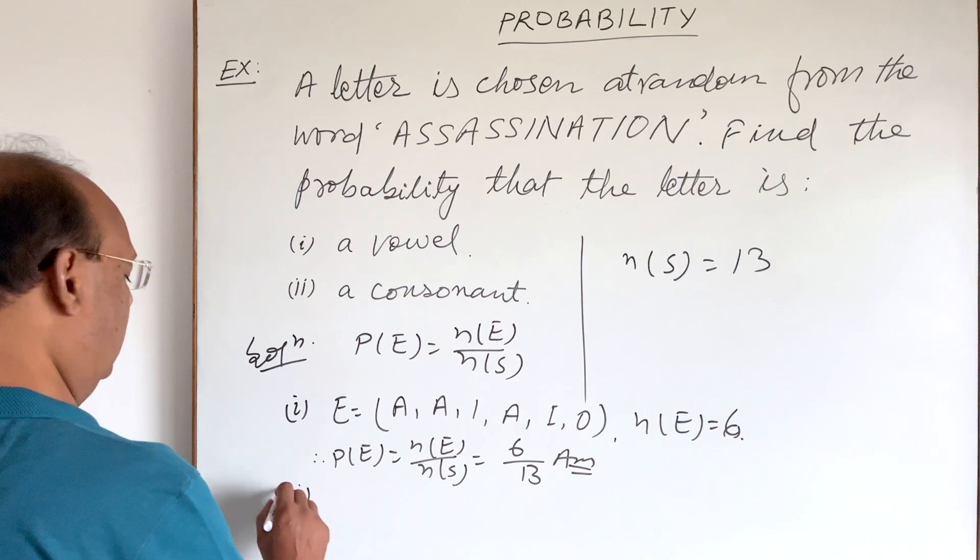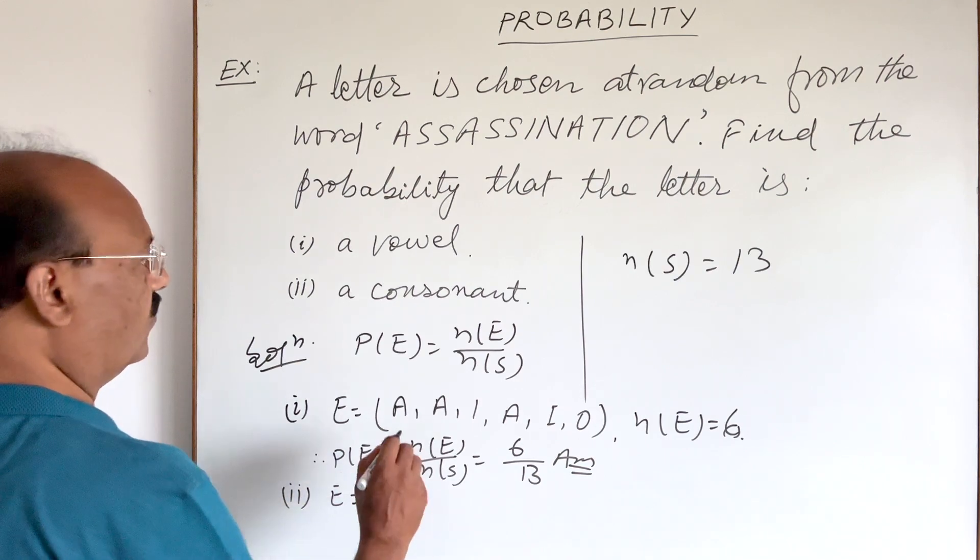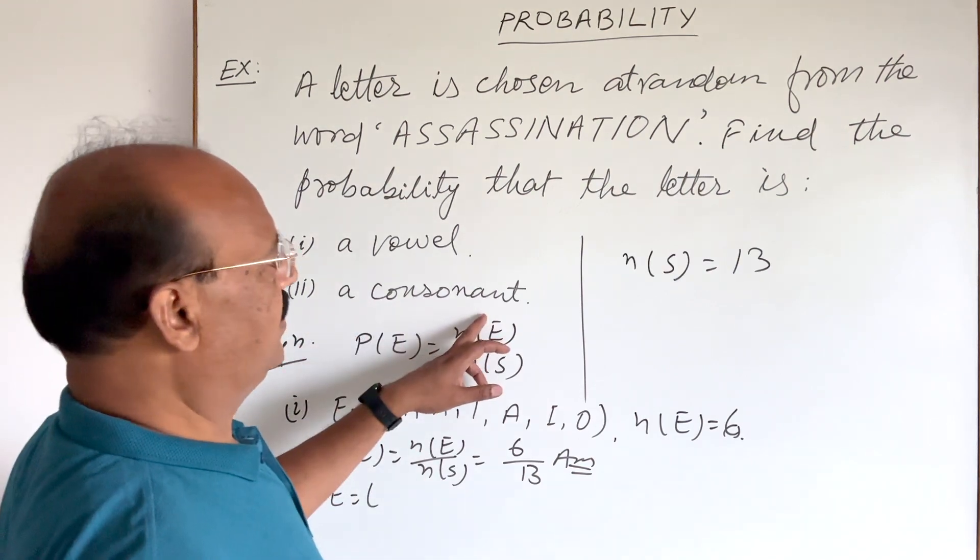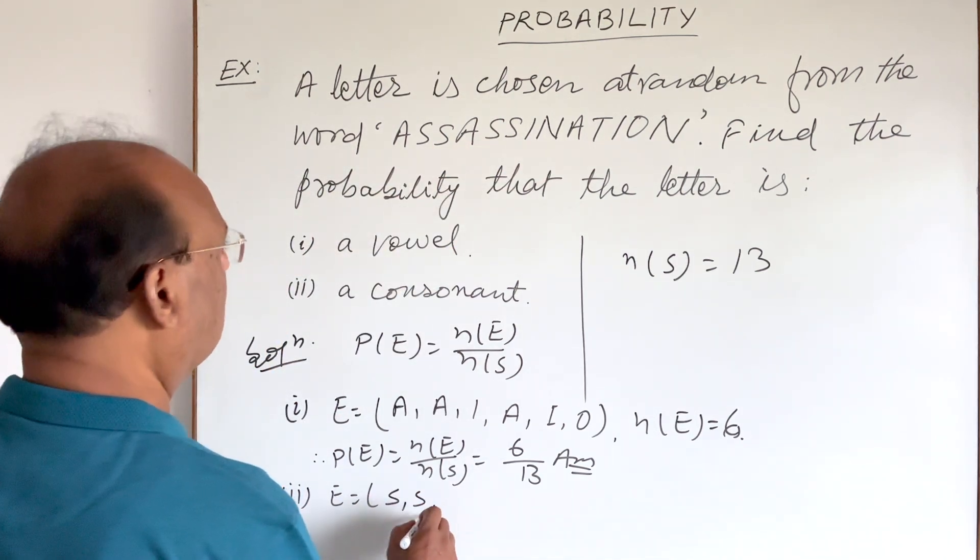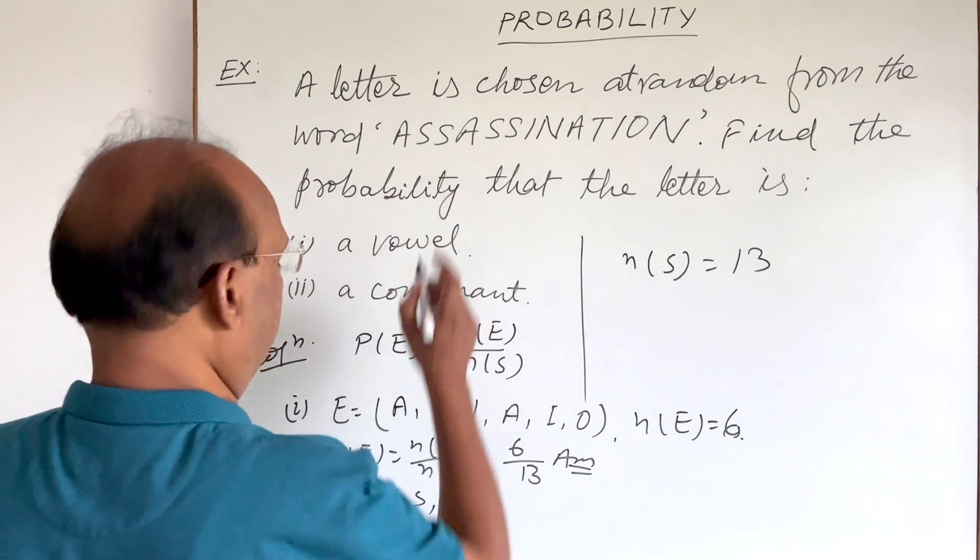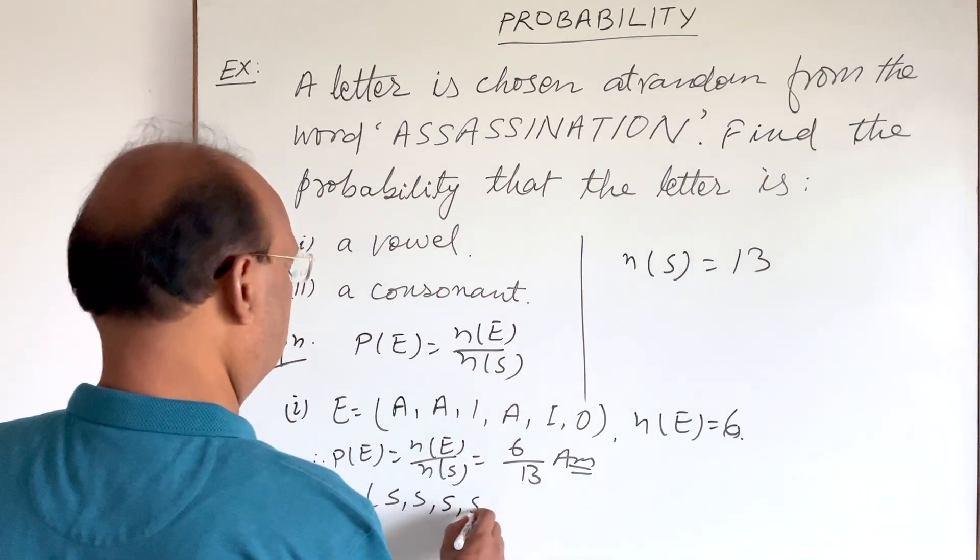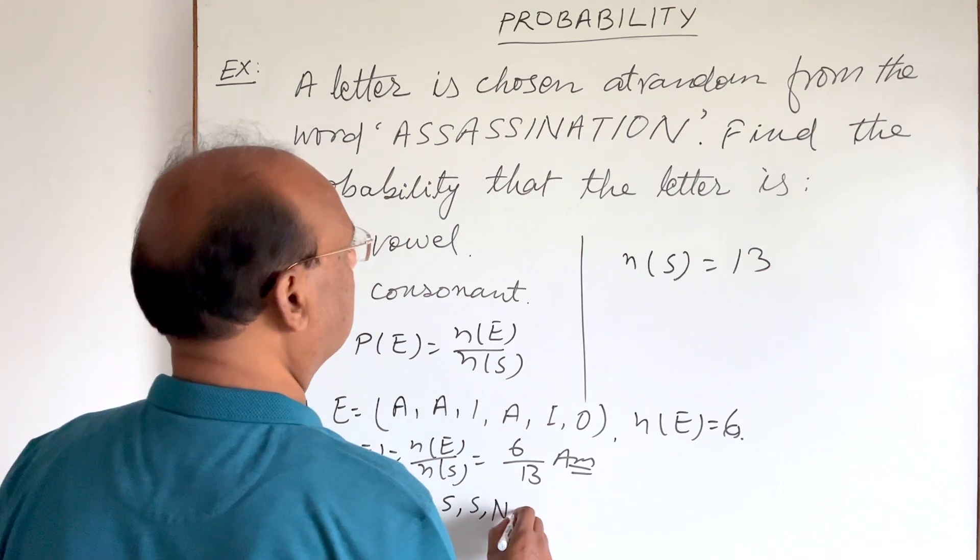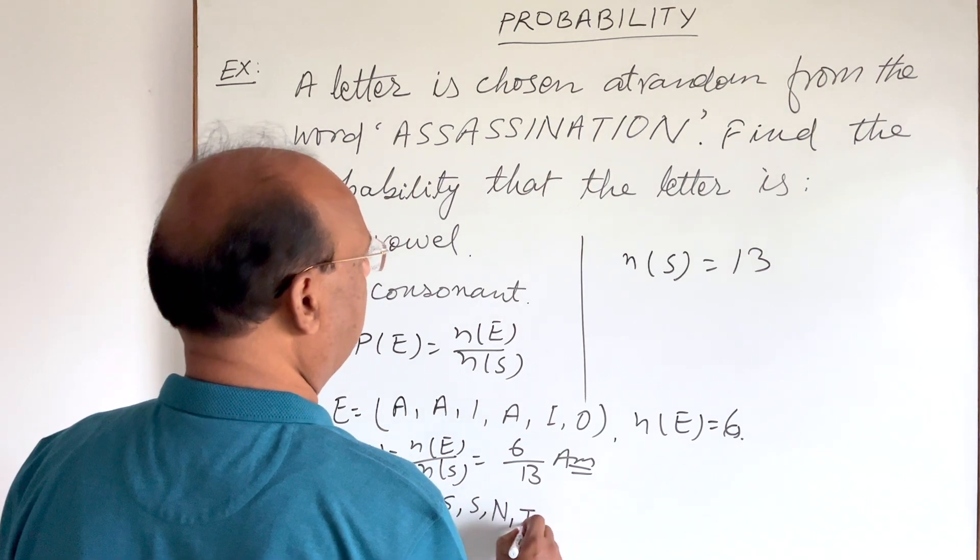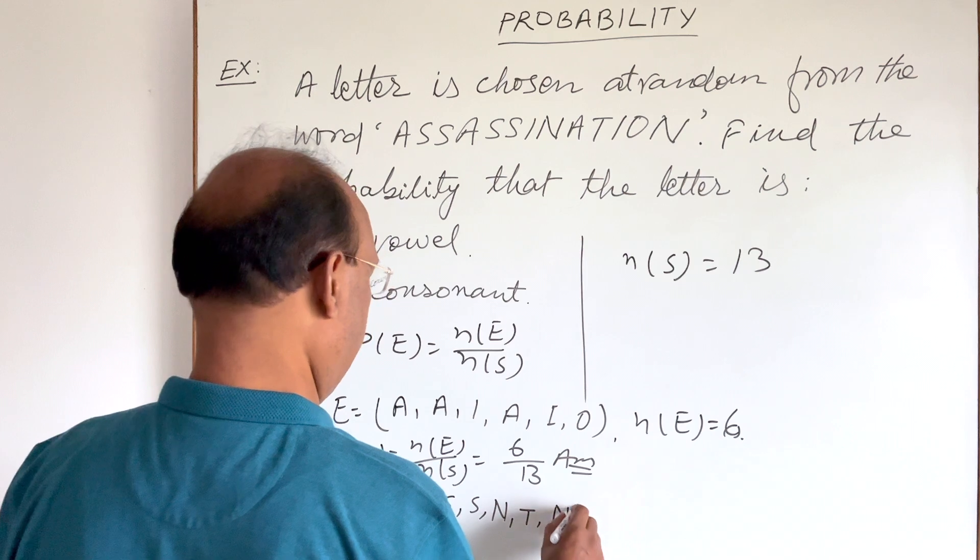And second part, here our event is a consonant. Let us see how many consonants are here. S, S, again S, S, S, S, then N, then T, and again N.